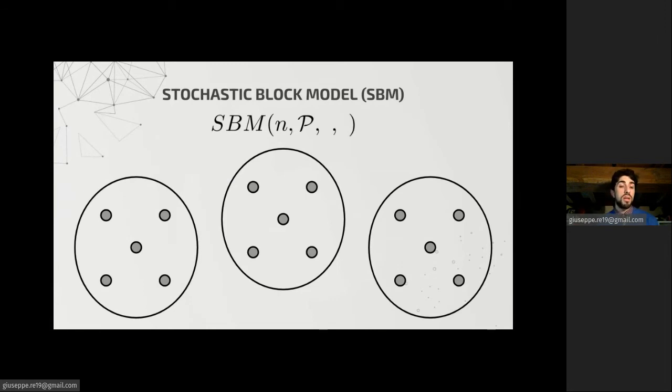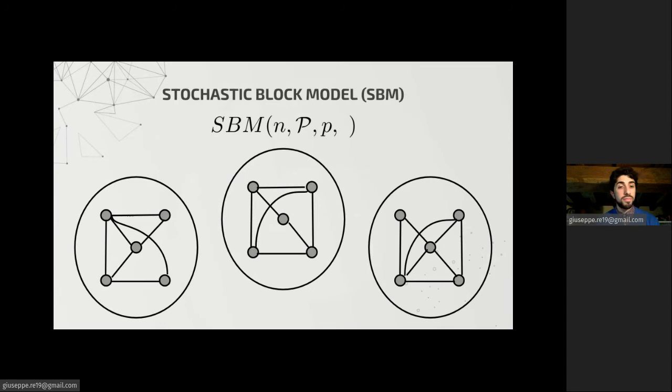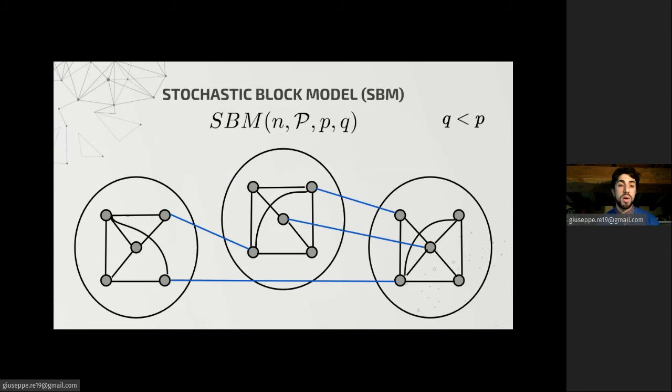In the stochastic block model random graph, we have n nodes partitioned into communities. And then for each pair of vertices in the same community, we toss a coin that gives head with probability P, that is a parameter of the model, and we add the corresponding edge to the graph if the outcome was actually a head. So we usually end up with tight communities. And for a pair of vertices belonging to different communities, we toss a different coin with a smaller probability Q of giving head, and so we will be less likely to have edges between different communities.